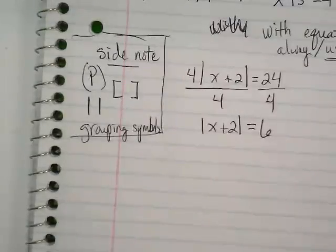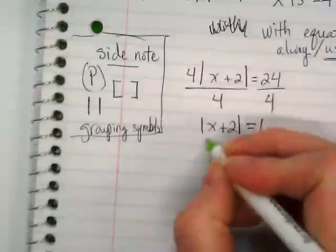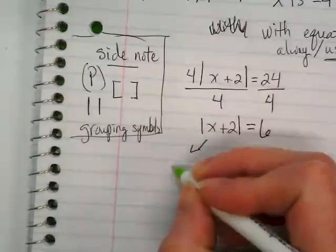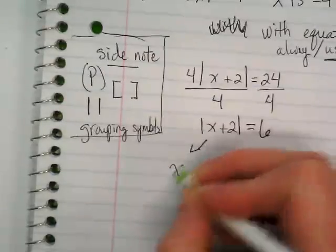You guys see that? This four over four is going to end up going to an invisible one. That means on the left side of our equation, we're just left with the absolute value of x plus two is now equal to six. We're going to have how many answers to this? Two. And there's two ways to do it.